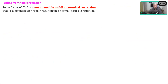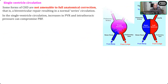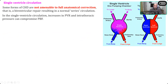There is another more difficult congenital heart disease called single ventricle circulation. Some congenital heart diseases are not amenable to full anatomical correction — you cannot have a biventricular repair resulting in a normal two-ventricle circulation. These are also called the univentricular system, where there is increased pulmonary vascular resistance which can compromise pulmonary blood flow. In a single ventricle, there is only one chamber, so both deoxygenated and oxygenated blood mix and then travel to all parts of the body including the lung.